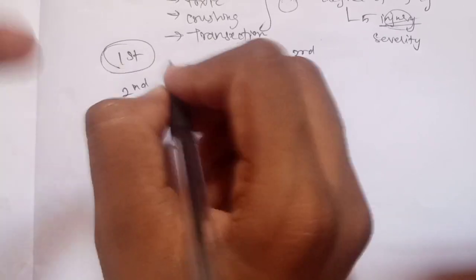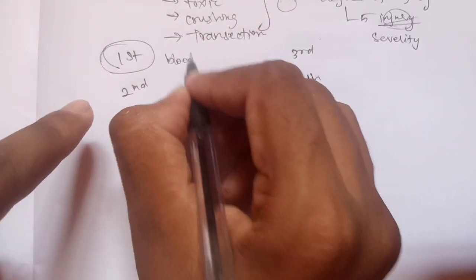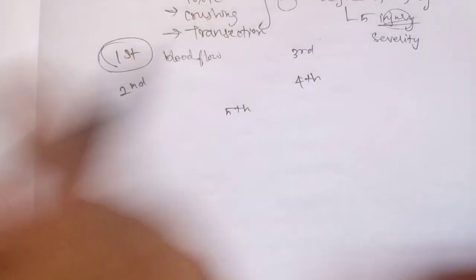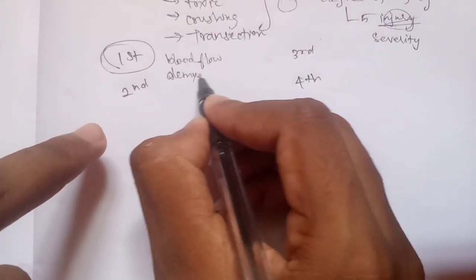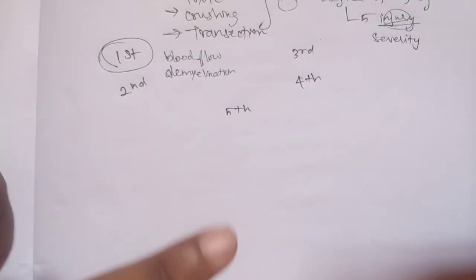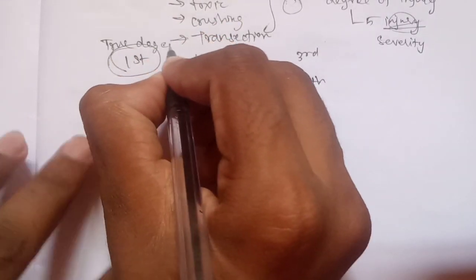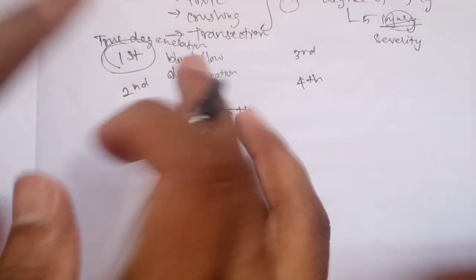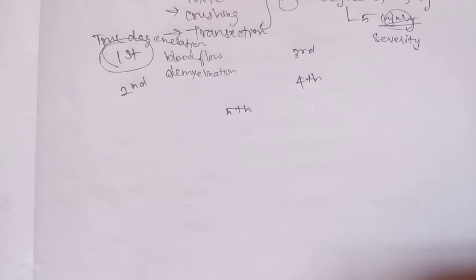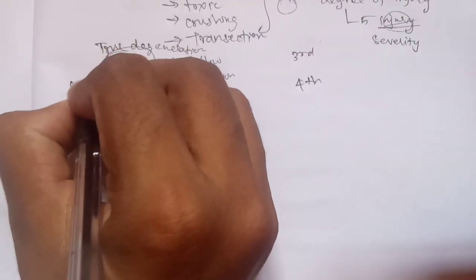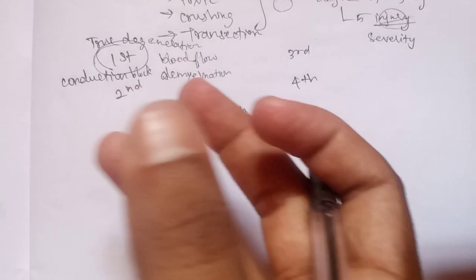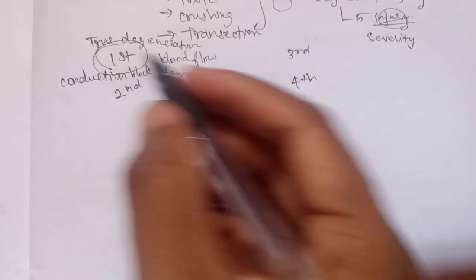If we have a short period of pressure, this is the first degree. The blood flow is obstructed, and that is why we create hypoxia. That is why we get demyelination — this is a degeneration. The axon is not destroyed, so it is a temporary loss of function — a conduction block. The axon has a conduction block, so function is reduced.